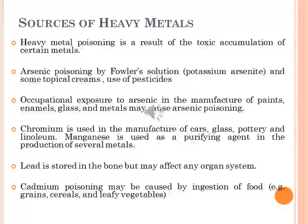Heavy metal poisoning is basically the result of toxic accumulation of certain metals that compete with and replace essential minerals, affecting several organ systems. Arsenic poisoning may be caused by medications including potassium arsenide and certain tropical creams used in skin treatments that contain arsenic. Arsenic is used in the manufacture of pesticides; ingestion of herbicides, insecticides, fungicides and rodenticides containing arsenic may cause arsenic poisoning. Other forms of occupational exposure include galvanizing, etching, lead plating, smelting and wood preserving. Arsenic is also found in contaminated water, seafood and algae.